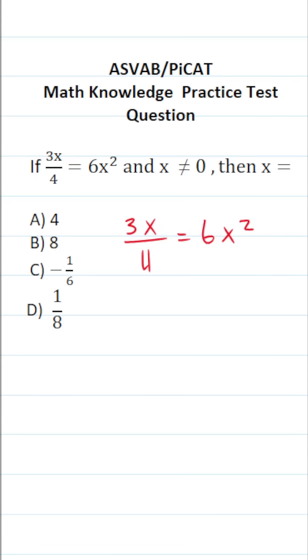The first thing I'm going to do to solve this equation is clear 4 from the denominator of 3x. To do that, I'm going to multiply both sides of the equation by 4. In doing so, this crosses out, leaving me with 3x over here. 4 times 6x squared becomes 24x squared.